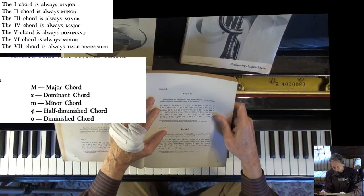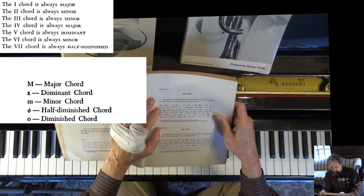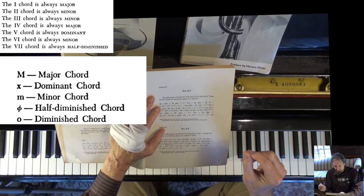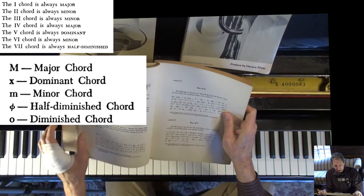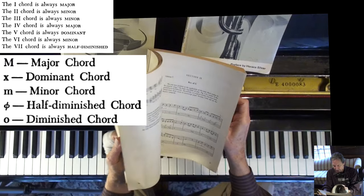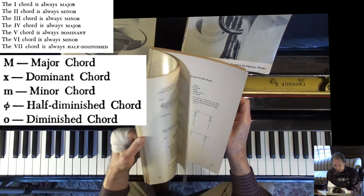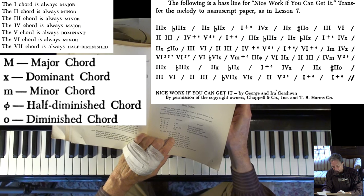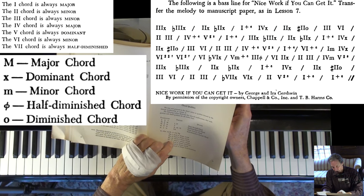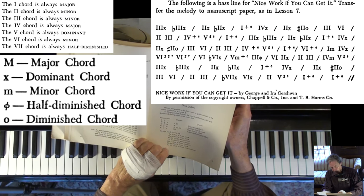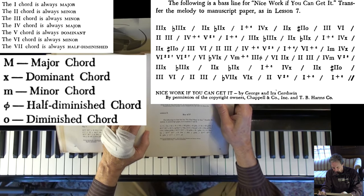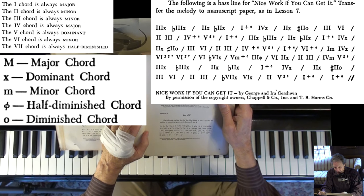But here's the thing, the dude who left the comment said that I'm using the uppercase Roman numerals rather than the lowercase for minor. And back here on the other page, it just says the two chord is always minor, the three chord is always minor, the six chord is always minor. One and four are major, five is dominant, and seven is half diminished.